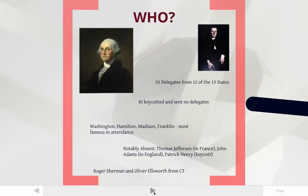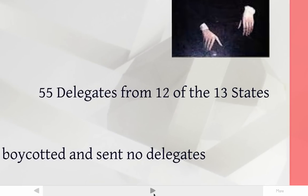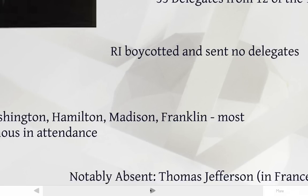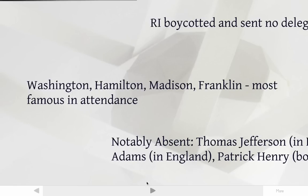Finally, who was there? George Washington was probably the most famous person there. Overall, there were 55 men from 12 of the 13 states. Rhode Island did not send any delegates because they boycotted it — they did not want to change the Articles of Confederation. Rhode Island was actually the only place where things were going well under the Articles. The key people you might have heard of who were in attendance include George Washington, Alexander Hamilton, James Madison, and Ben Franklin.